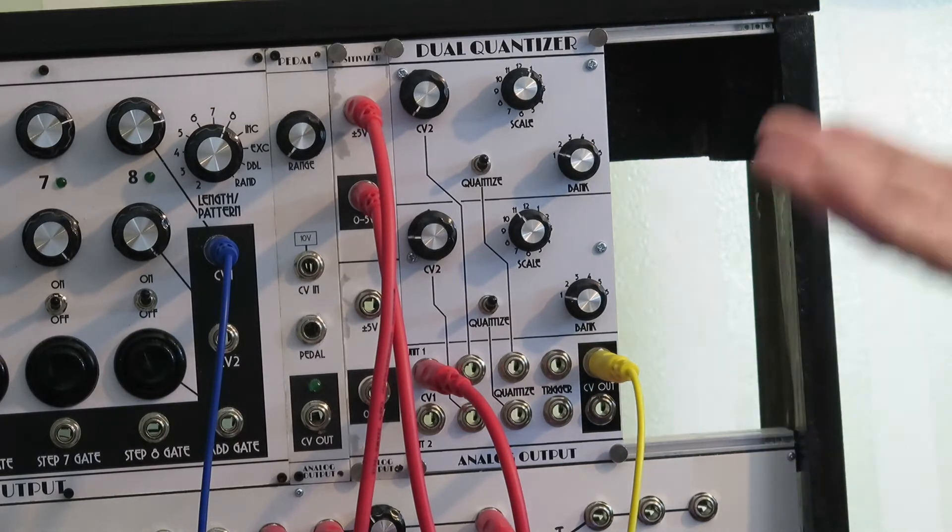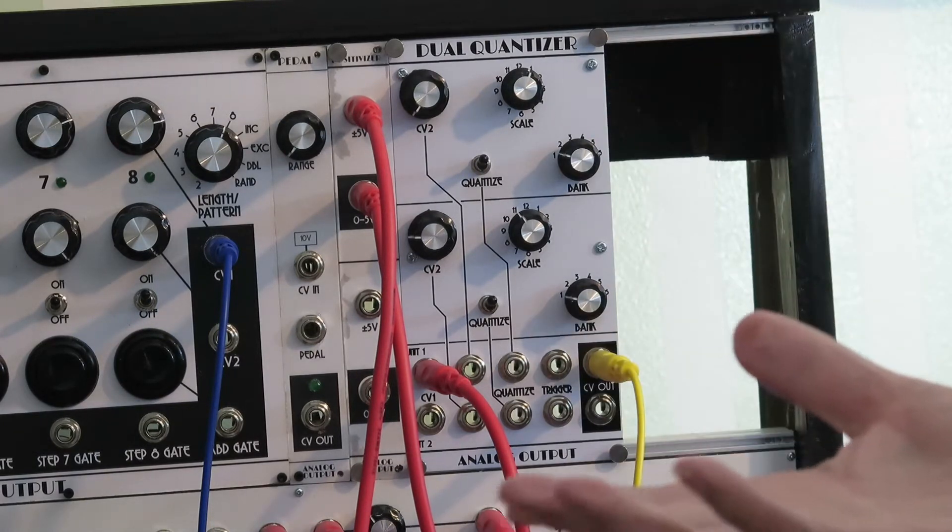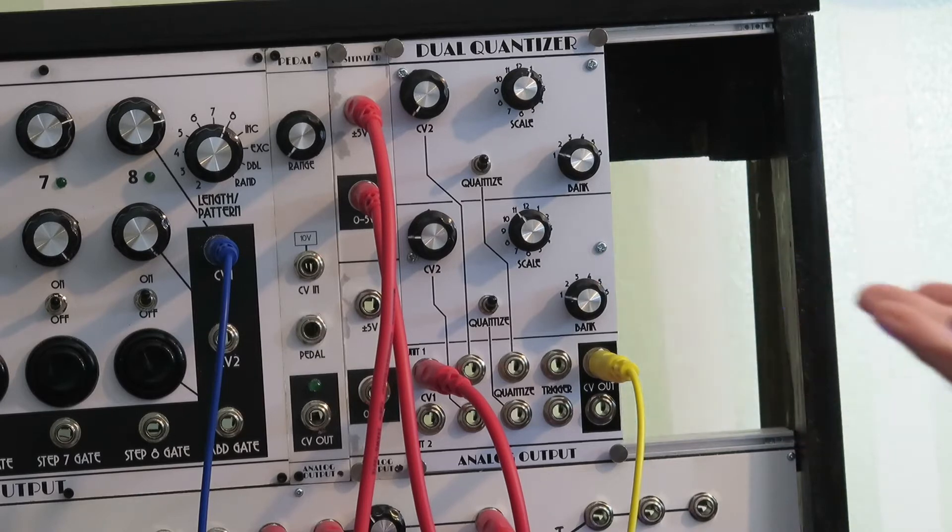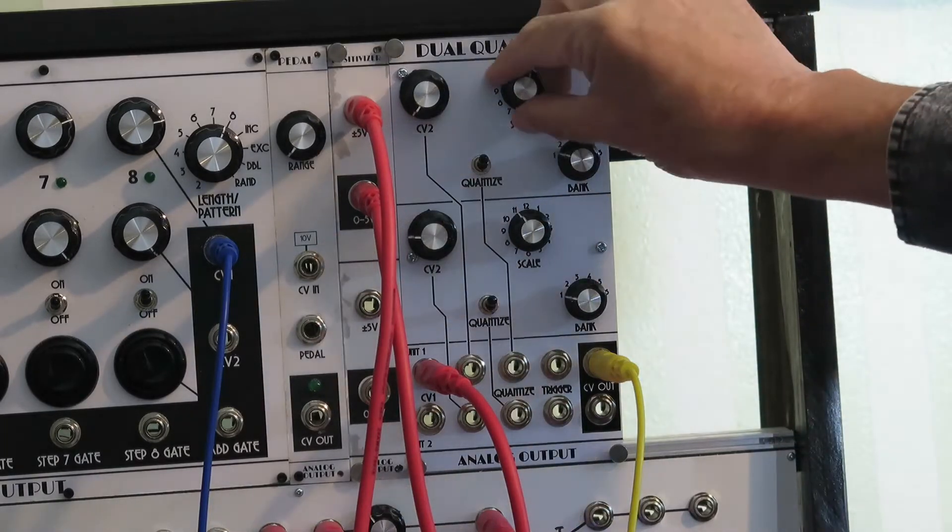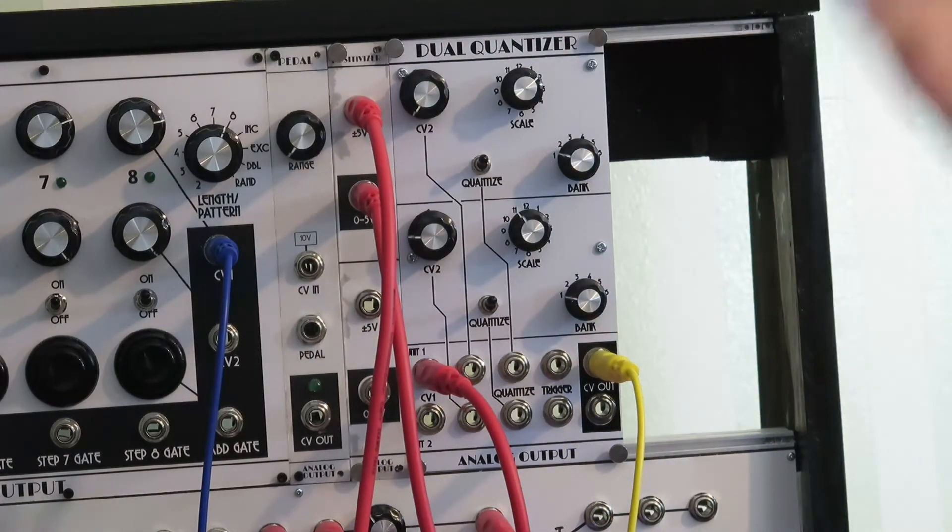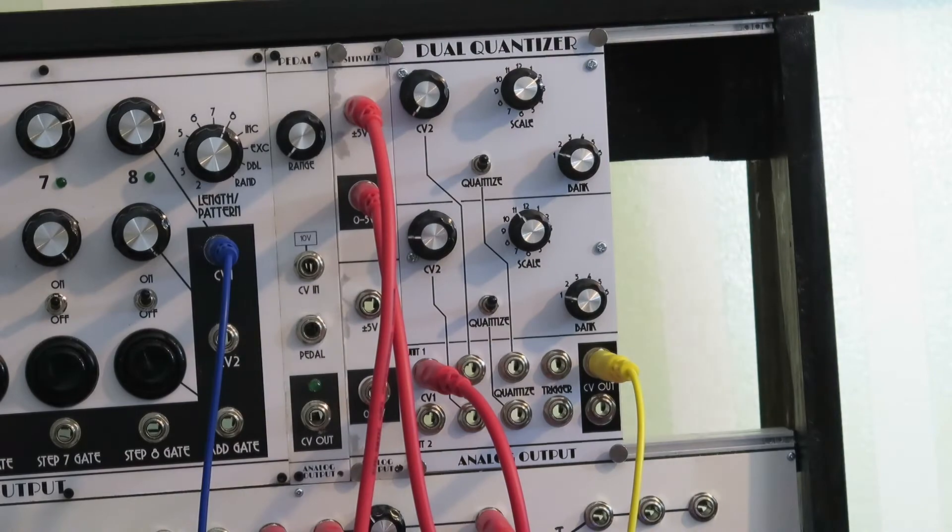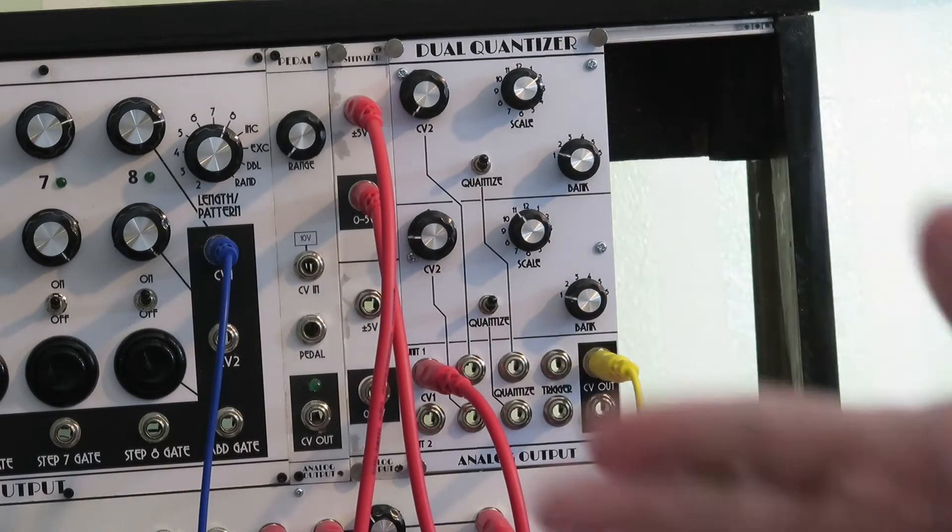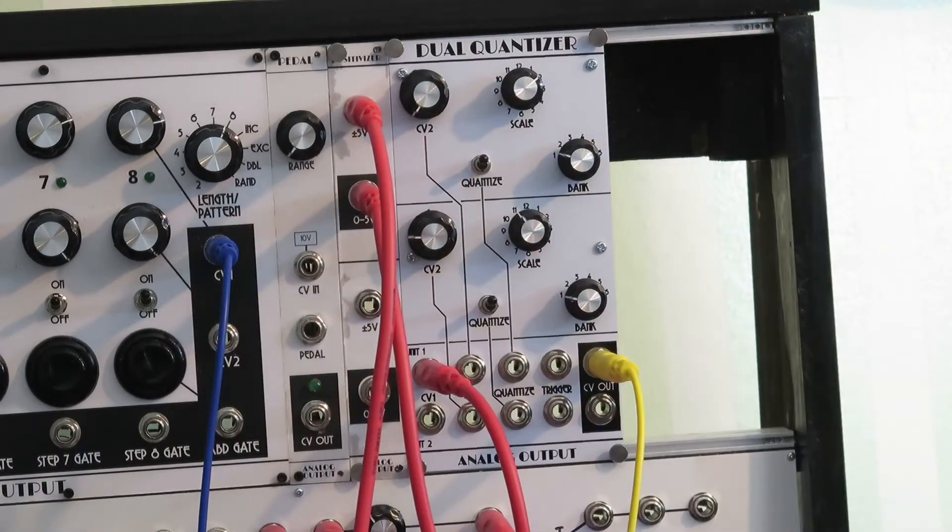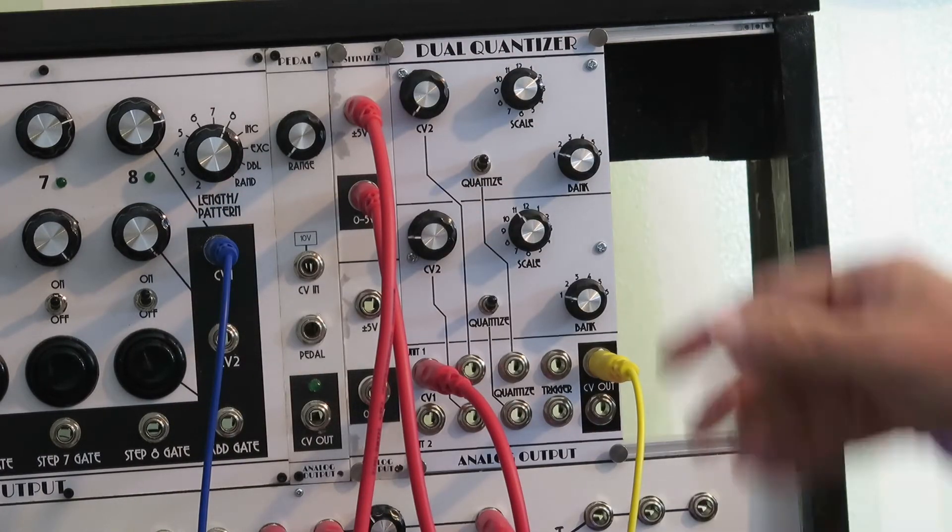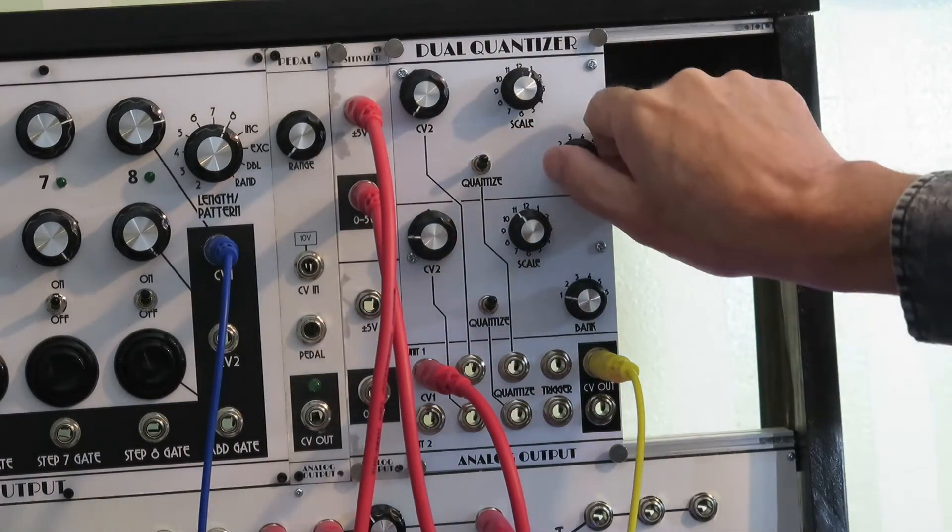And there are five other banks, which gives you up to 72 possible scales, which sounds like a lot, but keep in mind that what we've got here is a major scale, but in particular it's C major, or whatever this offsets it to. Sometimes you want to have other keys, and so, for instance, in bank 2, you've got